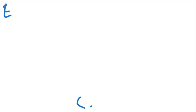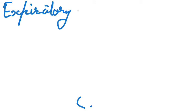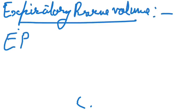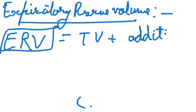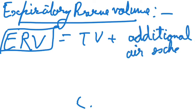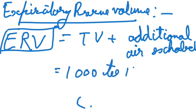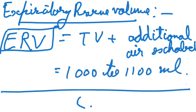Next we have the vice versa of it, that is expiratory reserve volume (ERV). It is the additional volume of air a person can expire by a forceful expiration — this is the tidal volume plus the additional air a person expires. This is around 1000 to 1100 ml on average.